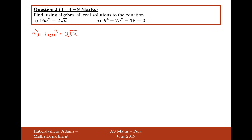Let's first start off by squaring both sides. 16 squared is 256a to the power of 4 — that's what happens if you square a squared — and squaring the right hand side: the square of 2 is 4, and the square root of a is a. So at least we've now got no roots in there.